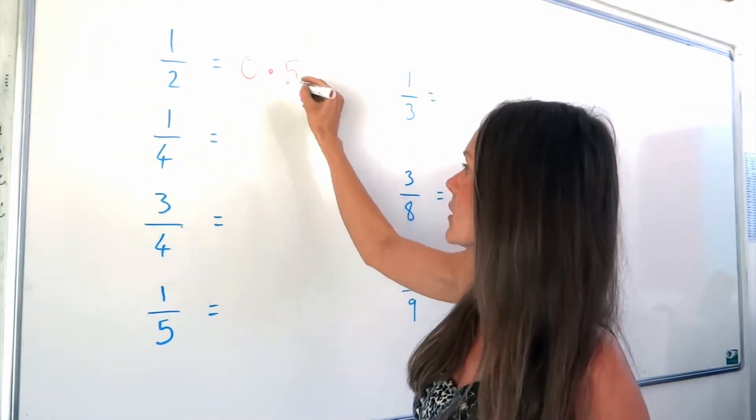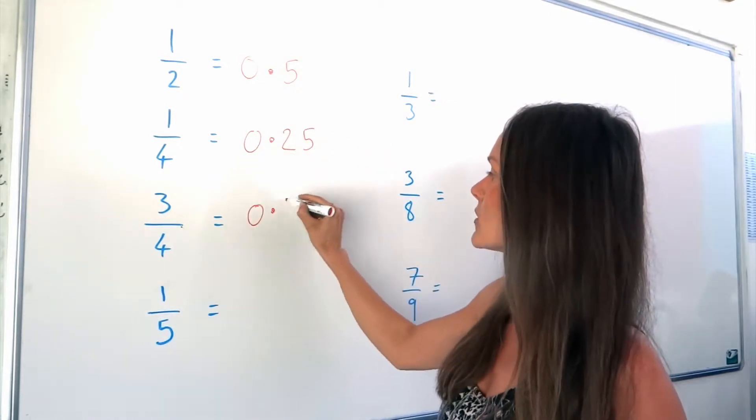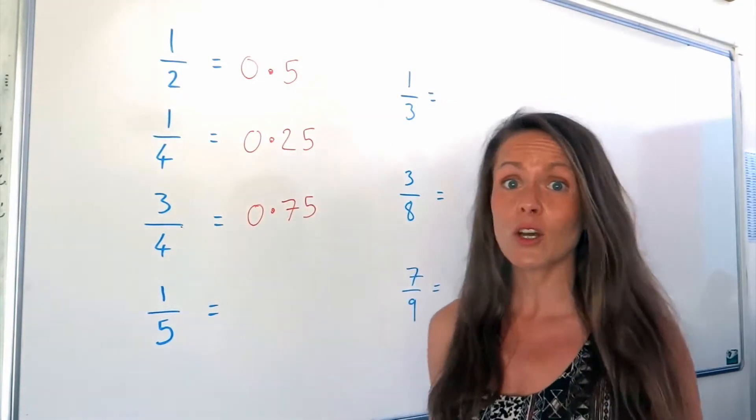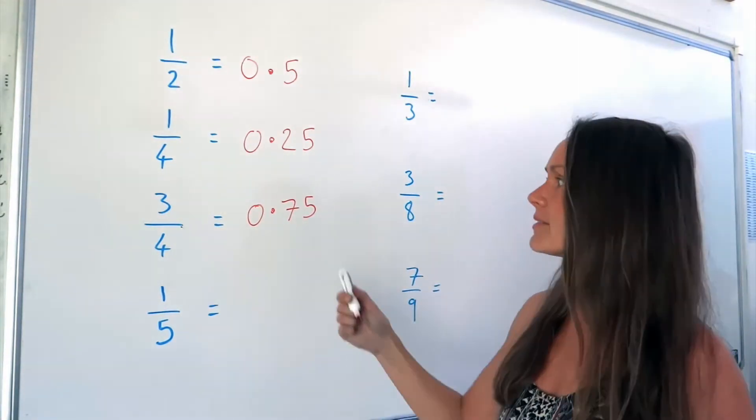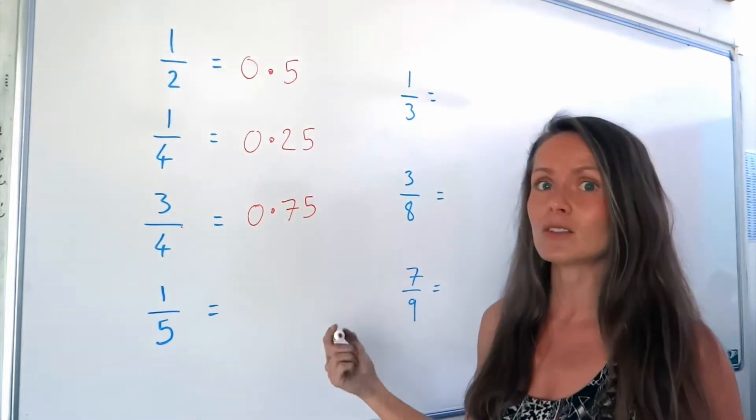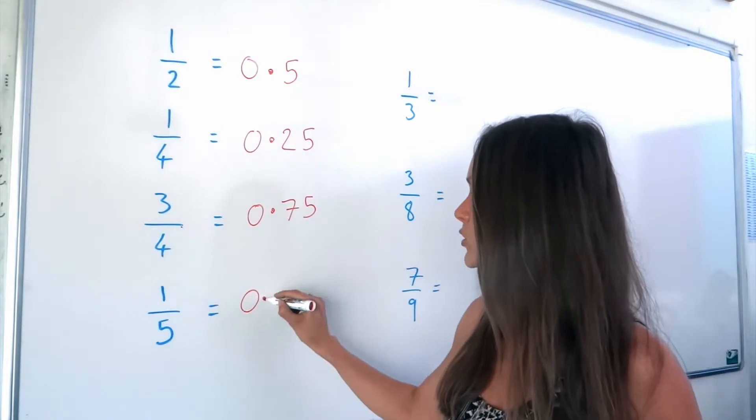One half is 0.5, one quarter is 0.25, three quarters is 0.75. You probably already know them without realizing it. But if you don't, I really would recommend that you just learn maybe these ones off by heart, because they come up fairly often in maths, and this one down here is 0.2.